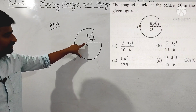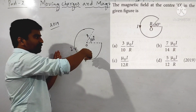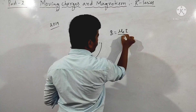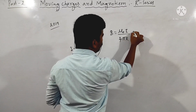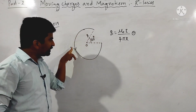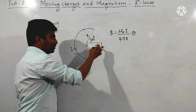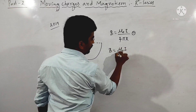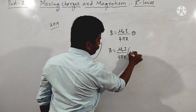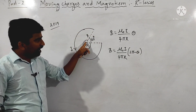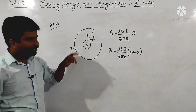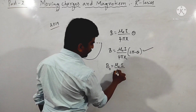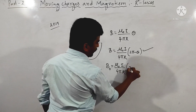The magnetic field at center O due to a circular arc: the formula is B equals mu naught i divided by 4 pi r into theta, where theta is the angle subtended by the arc in radians. For the outer arc, the angle is 2 pi minus theta, so B equals mu naught i divided by 4 pi r into (2 pi minus theta).